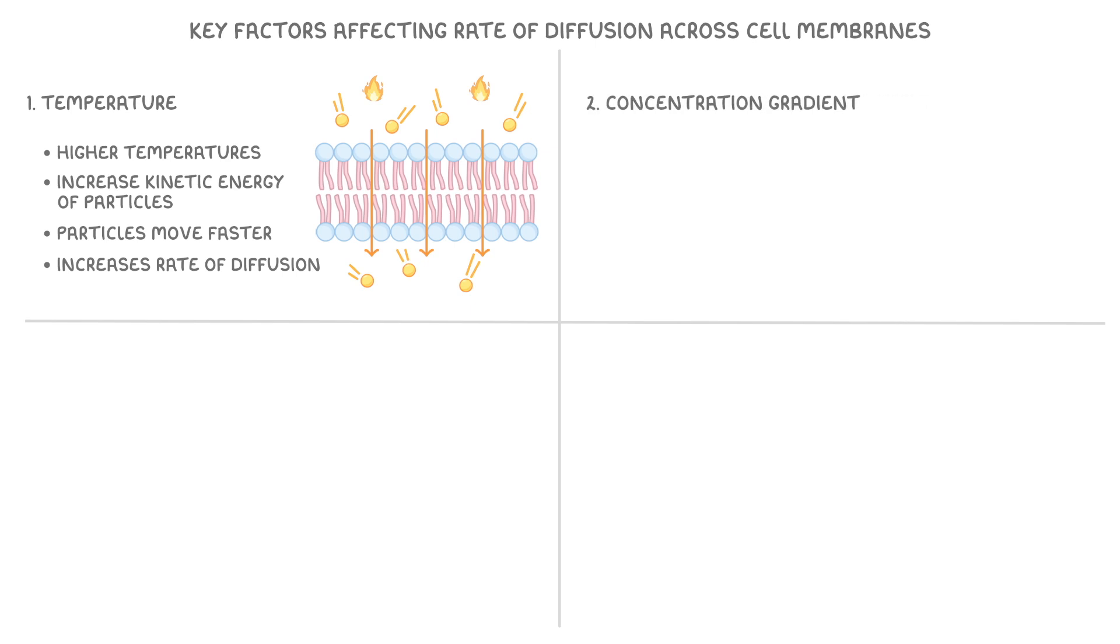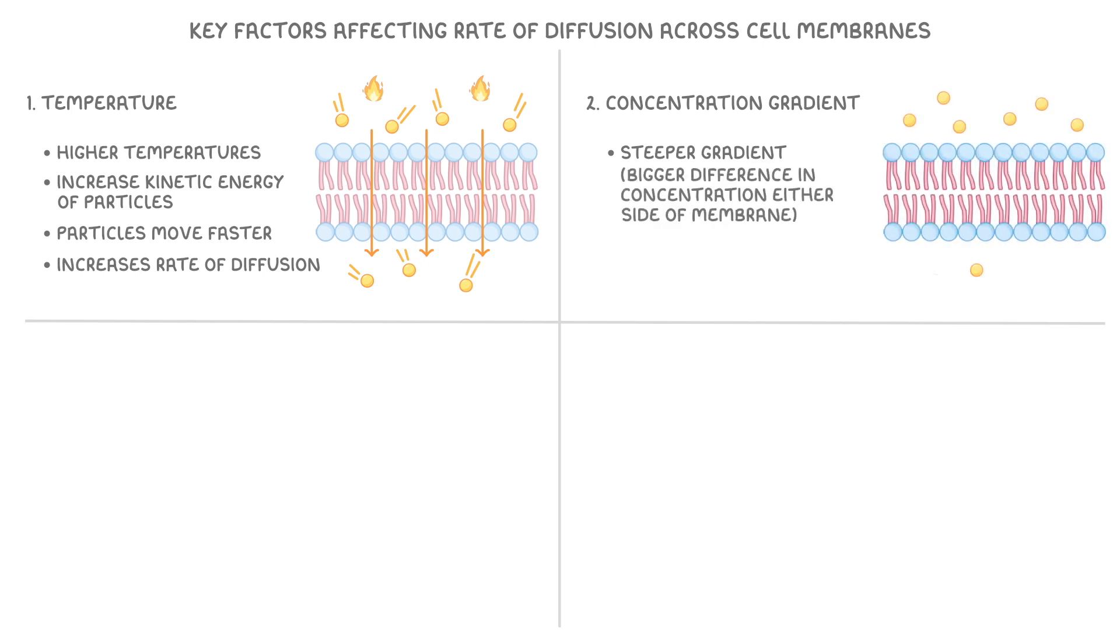The next factor is the concentration gradient, where a steeper gradient means there's a bigger difference in concentration either side of the membrane, which also increases the rate of diffusion from the area where the particles are more concentrated to the area where the particles are less concentrated.